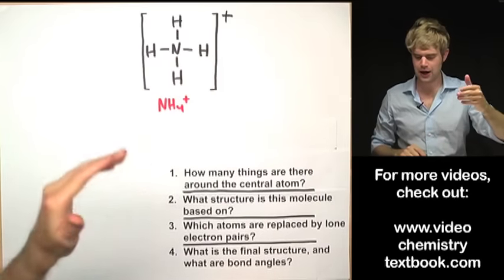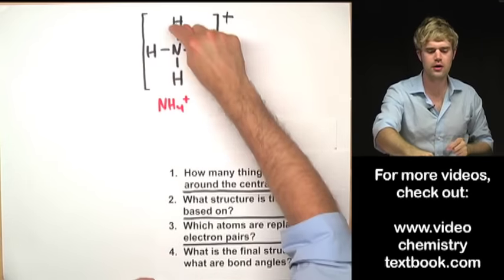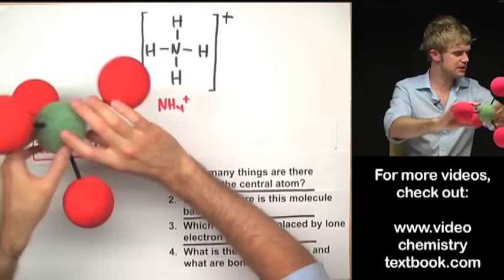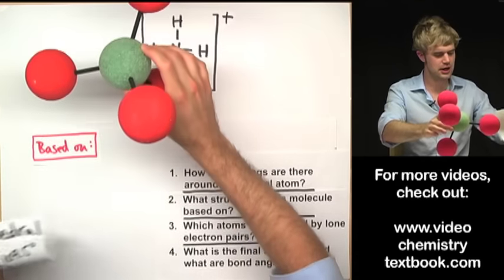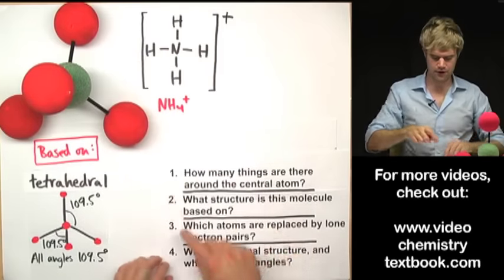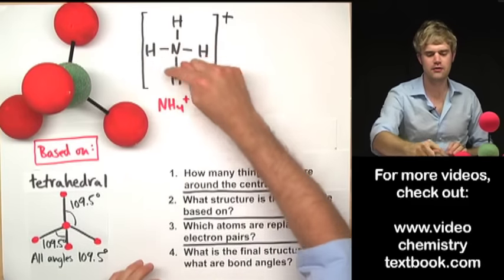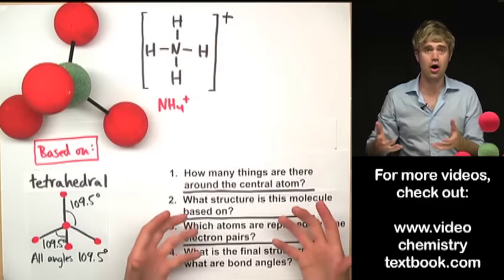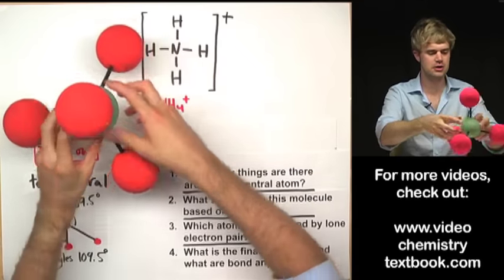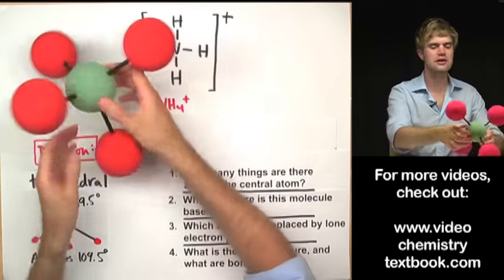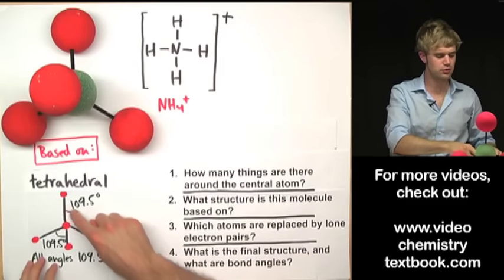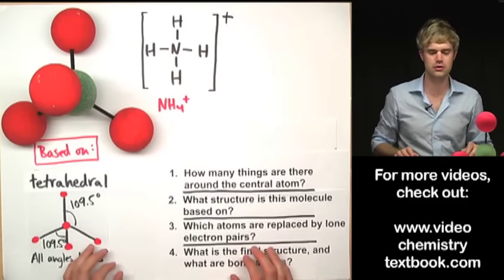NH4⁺: how many things are around the central atom? One, two, three, four — four bonds. It is based on the tetrahedral shape. None of the four positions are unshared electron pairs; four atoms surround the central atom. So the final shape is tetrahedral, with bond angles of 109.5 degrees.